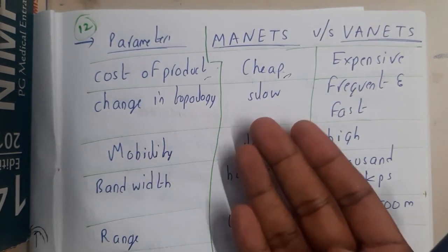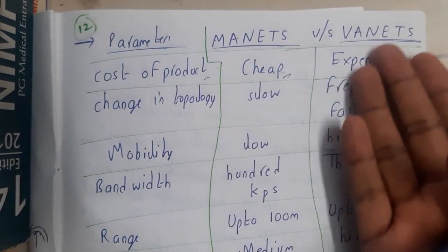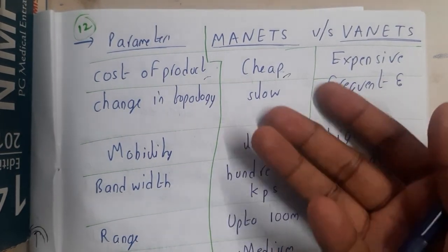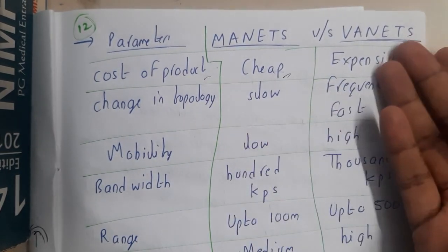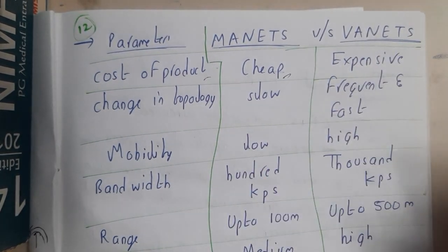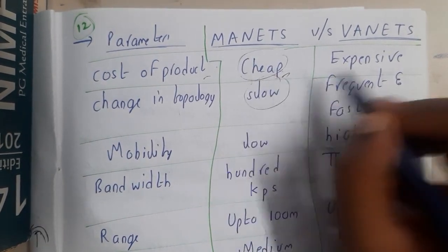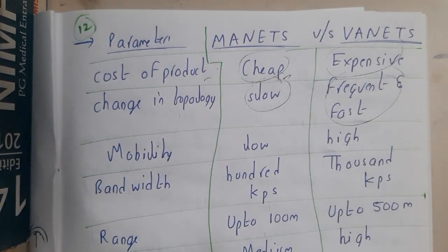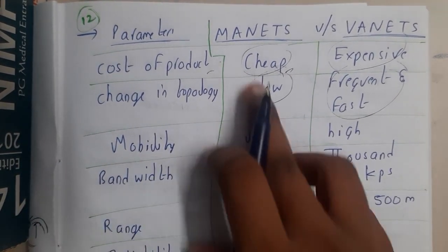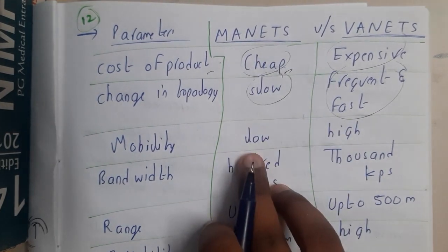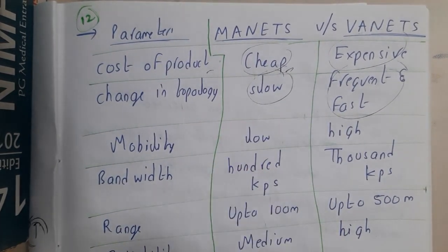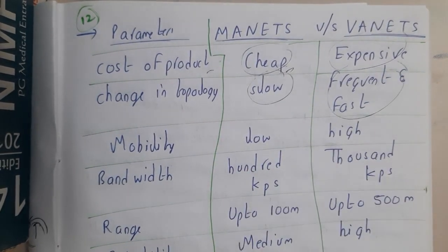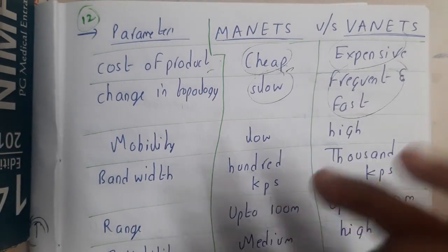The topology in MANETs is slow, whereas in VANETs it is fast because everything needs to happen quickly. Since MANETs are cheap they are slow, and since VANETs are expensive they are fast. Similarly, mobility in MANETs is low — you cannot move at high speeds — whereas in VANETs high-speed mobility is possible.